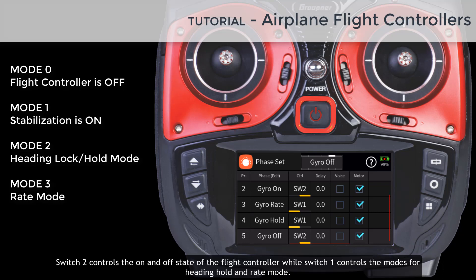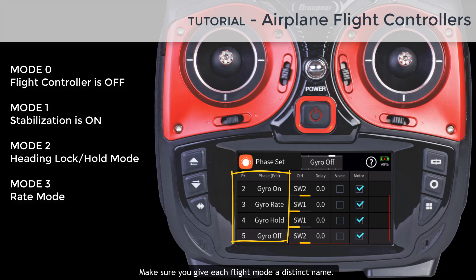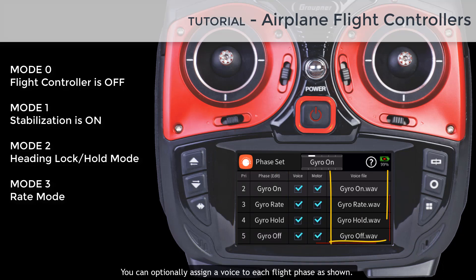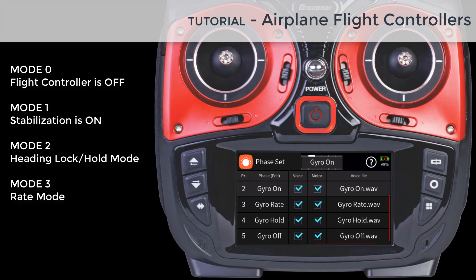Switch two controls the on and off state of the flight controller while switch one controls the modes for heading hold and rate mode. Make sure you give each flight mode a distinct name. You can optionally assign a voice to each flight phase. You will be able to download the model and voice files created in this tutorial from our website at GarpnerUSA.com from the flight controllers download page tab.